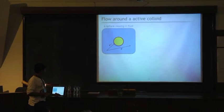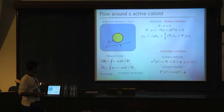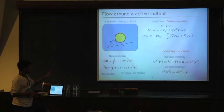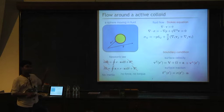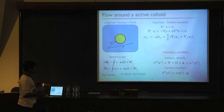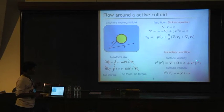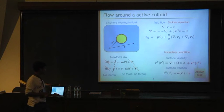Now, this should be satisfied by the boundary condition on the surface of the particle. On the surface of the particle, the first term is the translational velocity, then rotational velocity along with an active slip. What is this active slip?